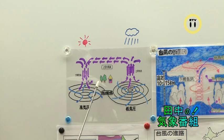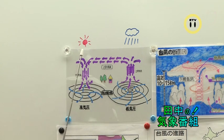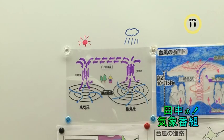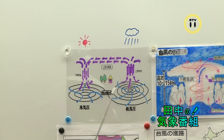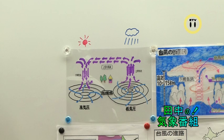じゃあ、次に高気圧。高気圧は、低気圧から流れてきたこの風がずっと上の方を流れていって、今度は降りてきます。そして、雲ができなくなります。天気は、達也くん、どうなりますか？——晴れです。高気圧は晴れ、低気圧は雨になります。